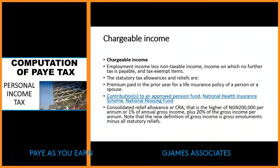Unlike before, dependent allowance, wife allowance, husband allowance — they do not exist anymore. Everything has been consolidated, and you now have 200,000 Naira to yourself, or 1% of your annual gross income. Because 1% would very rarely exceed 200,000, that figure is more or less a constant in any payroll system. Then your 200,000 — or 1% of your annual — plus 20% of your gross income is given to you as your statutory allowance and relief. It will not be taxed.